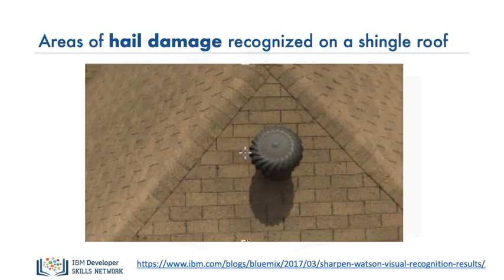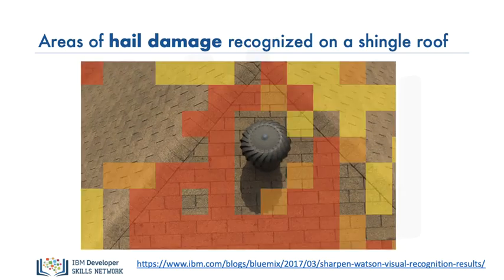Furthermore, insurance companies often have to worry about grading the severity of certain claims, which could be a little difficult for people to classify. For example, the image on the left contains small areas of damage from hail and ice pellets during a storm. With computer vision, damage could be much more easily classified. This could potentially save a lot of time and money spent in processing each insurance claim.